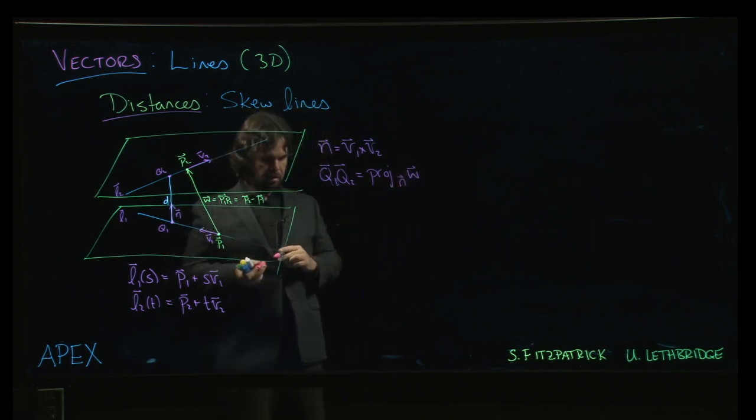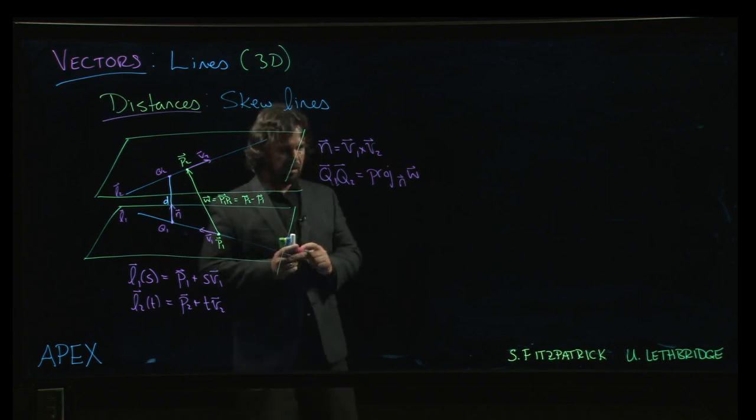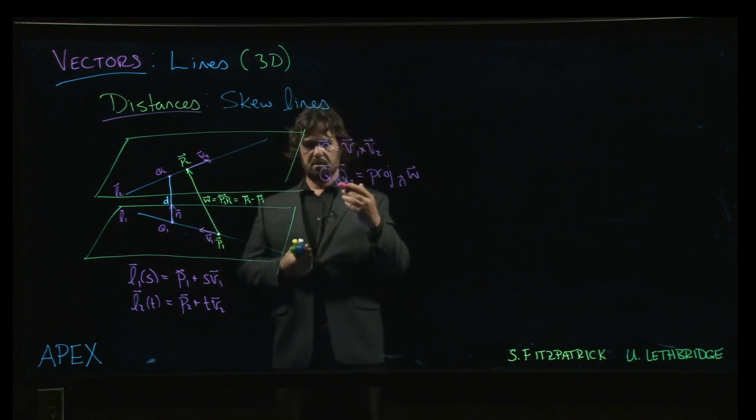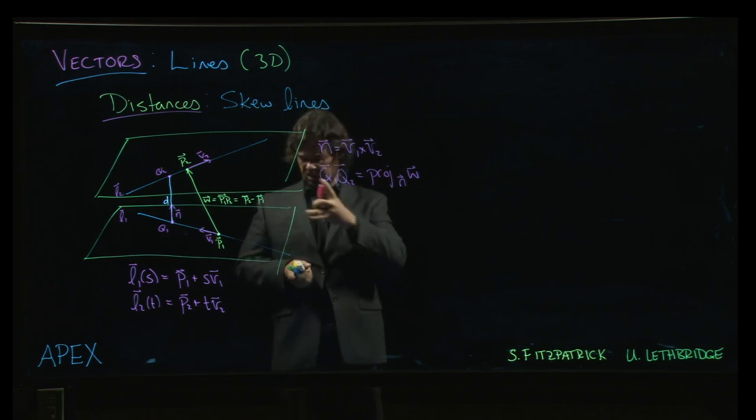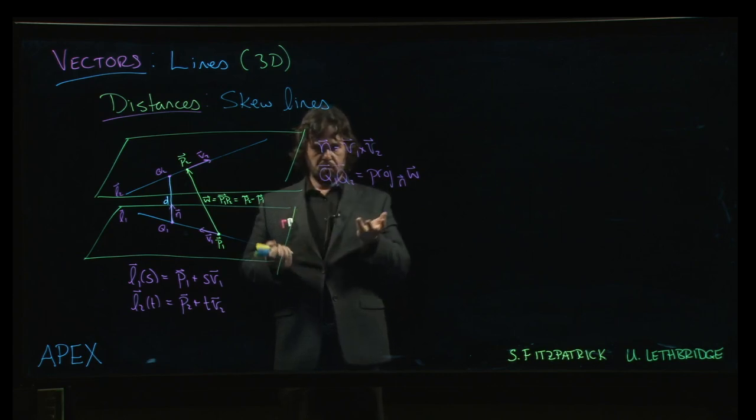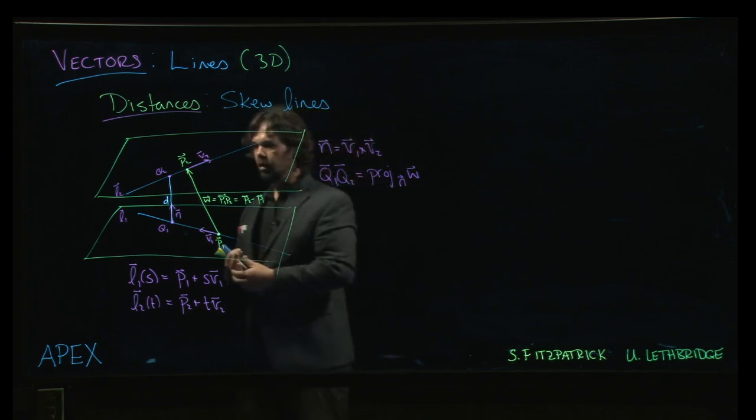And then to get the distance, we take the magnitude of that vector. So we take the magnitude. The textbook goes through that. They simplify the magnitude a little bit, but we know what that looks like.